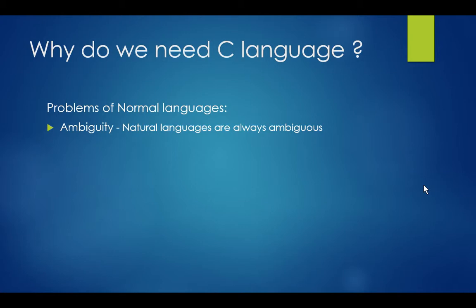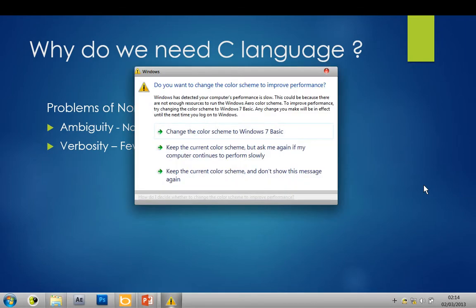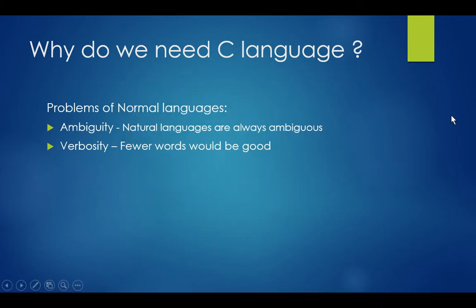The other problem with a normal language is wordiness. A simple thing is explained with a lot of emphasis in normal languages, but in programming we don't consider that to be good. We want the program code to be as simple as possible. Short words would be good always.